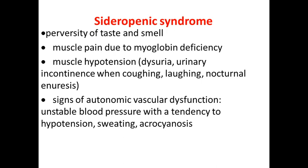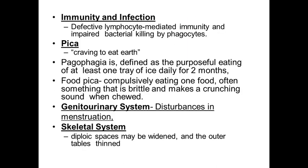Myoglobin deficiency can cause urinary incontinence when coughing or laughing, and nocturnal enuresis. Signs of autonomic vascular dysfunction include unstable blood pressure with a tendency to hypotension and sweating. Immunity and infection are also affected because of defective lymphocyte-mediated immunity and impaired bacterial killing by phagocytes.